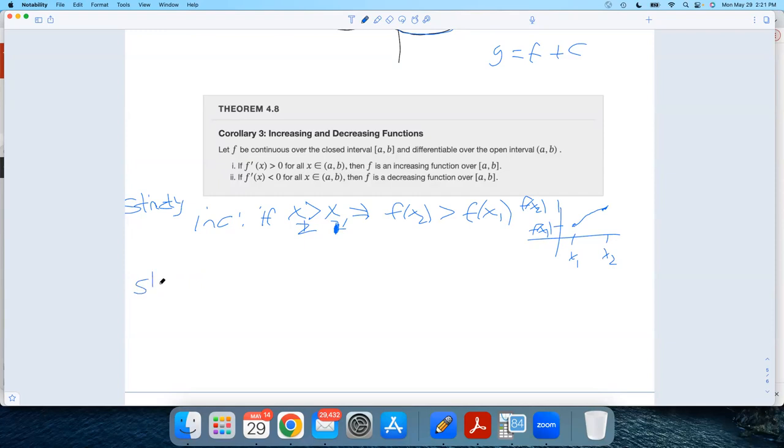And then strictly decreasing. And this says, if your second x value is bigger than your first, then your second y value is smaller than your second, or than your first. This says you're going downhill. Here's x1, x2. A decreasing function would look like this.